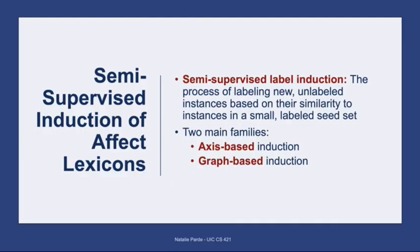Until now, we've assumed that we have access to some pool of annotators, regardless of whether they're experts or crowd workers. However, this may not always be the case, or you may simply not be interested in sourcing large quantities of labels from annotators. An alternative approach for learning labels for affect lexicons is to perform semi-supervised label induction — where you start from a small set of seed words with their corresponding labels and gradually find ways to label other unlabeled words based on their similarity to those seed sets. There are two main families of seed-based semi-supervised lexicon induction algorithms, generally categorized as axis-based and graph-based.